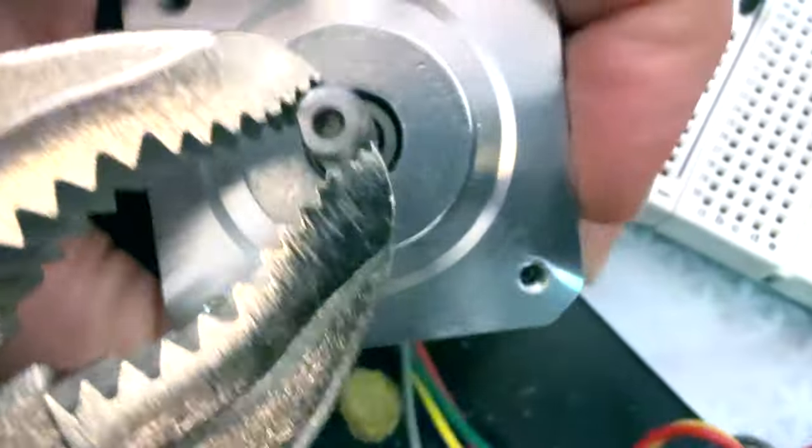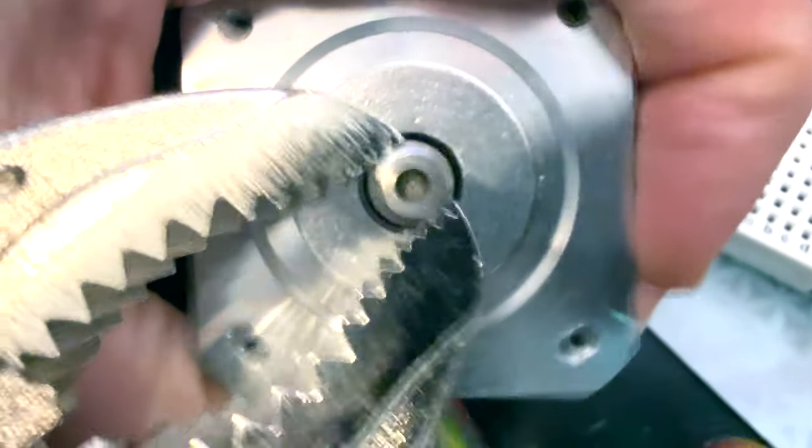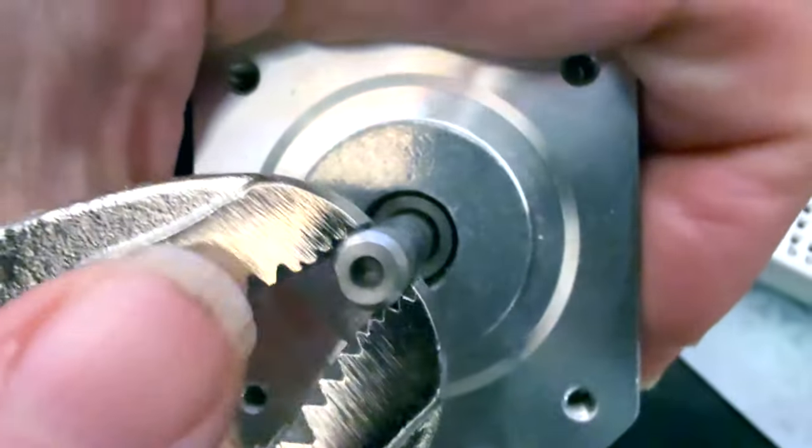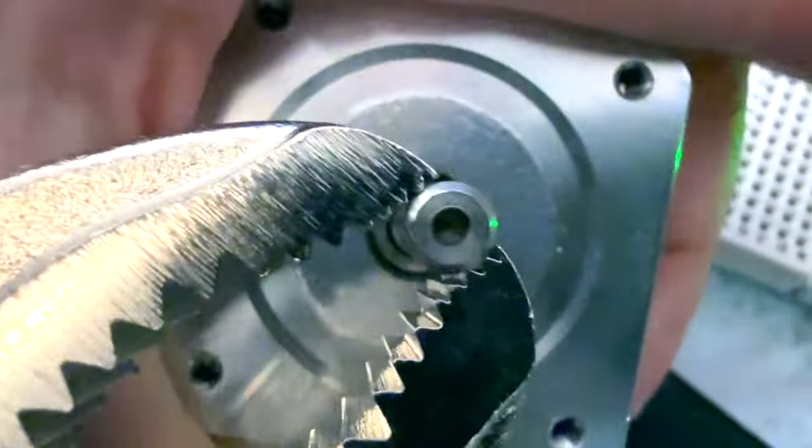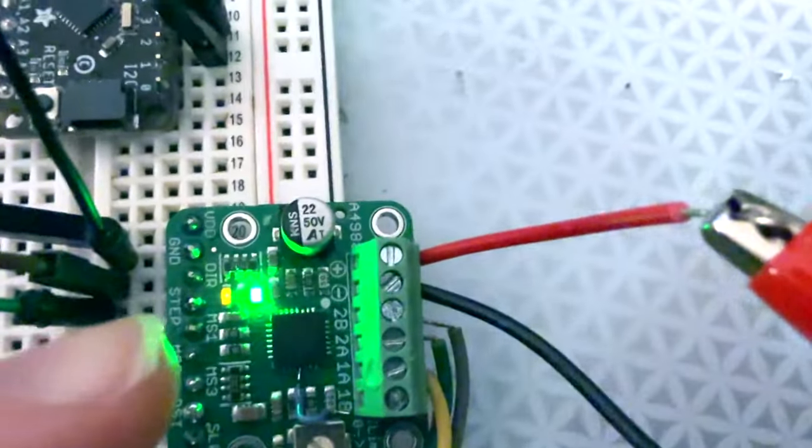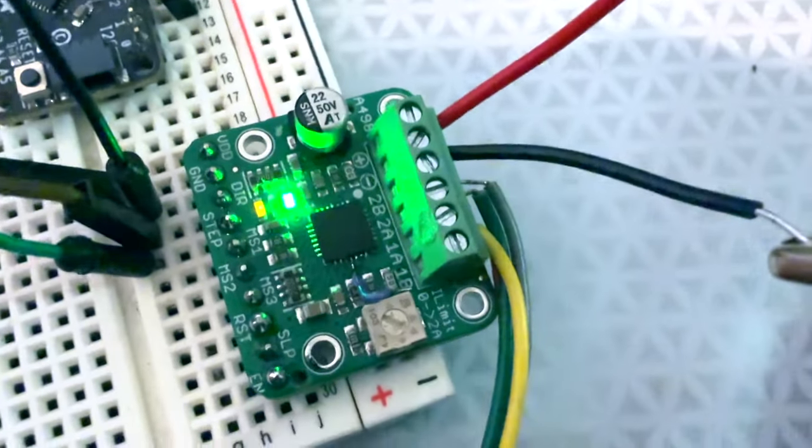And you see it actually fights against you quite well. So this means it's drawing up to an amp or two amps of current per coil. And it's going to heat up a lot. So this is when you would use forced air or a heat sink cooling system.